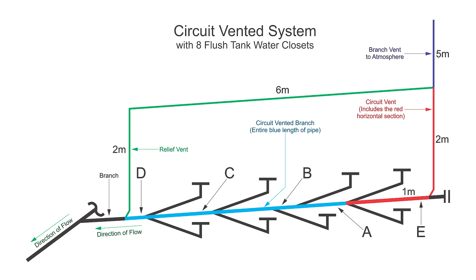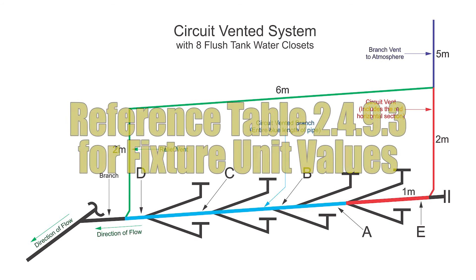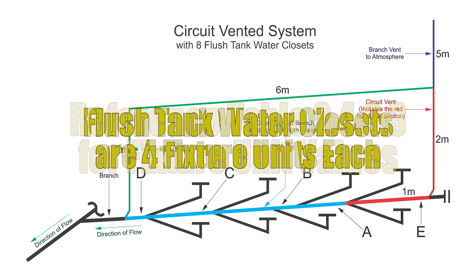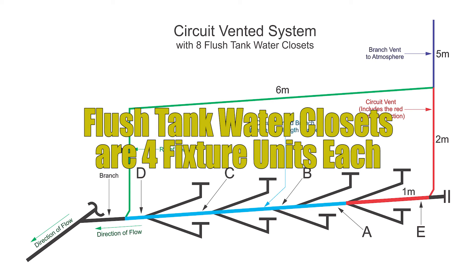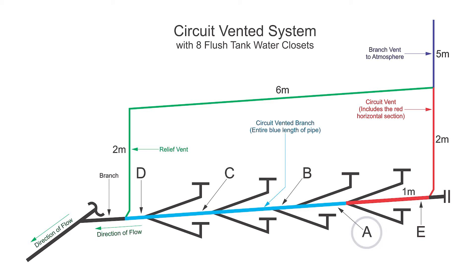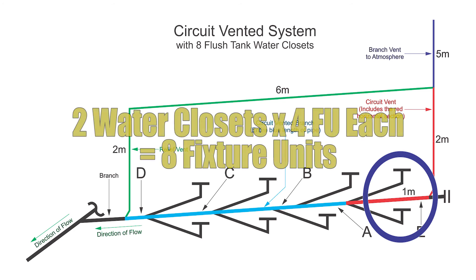So we're going to size the circuit vented branch. You'll need to reference code table 2-4-9-3 to find the fixture units of the different fixtures, but we have flush tank water closets — they are 4 fixture units each. Pipe A has 2 water closets draining through it, so 2 times 4 fixture units equals 8 fixture units.